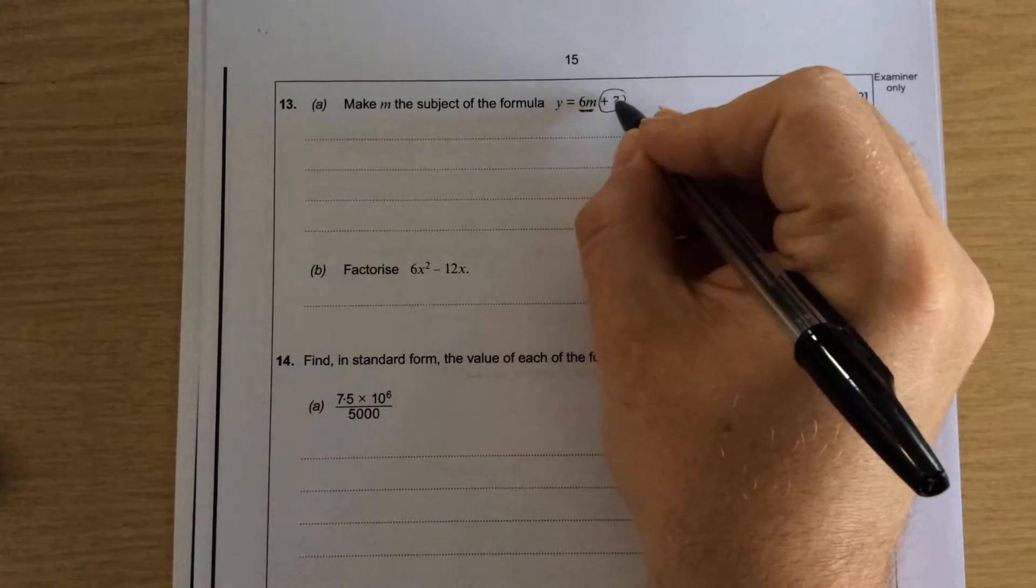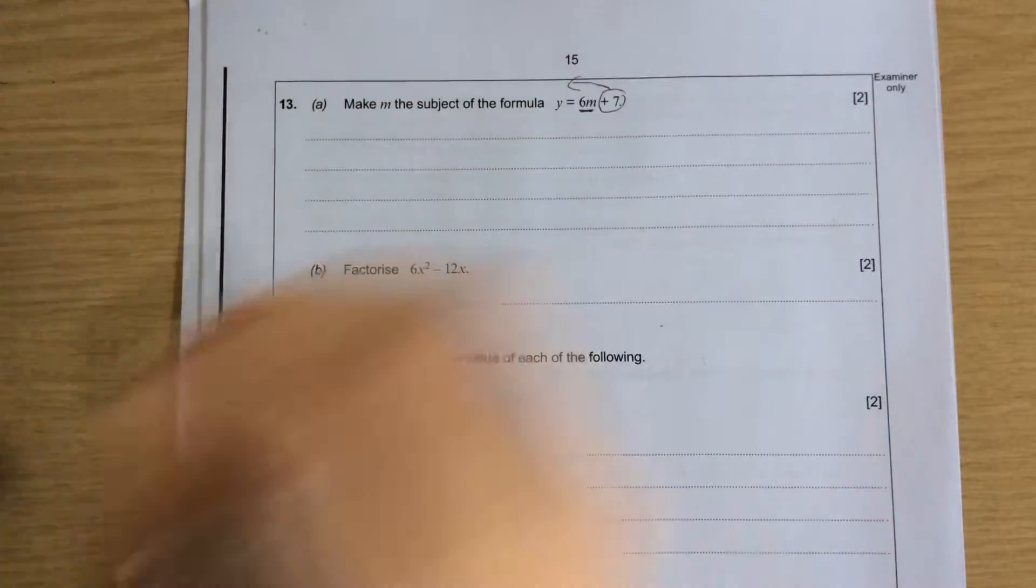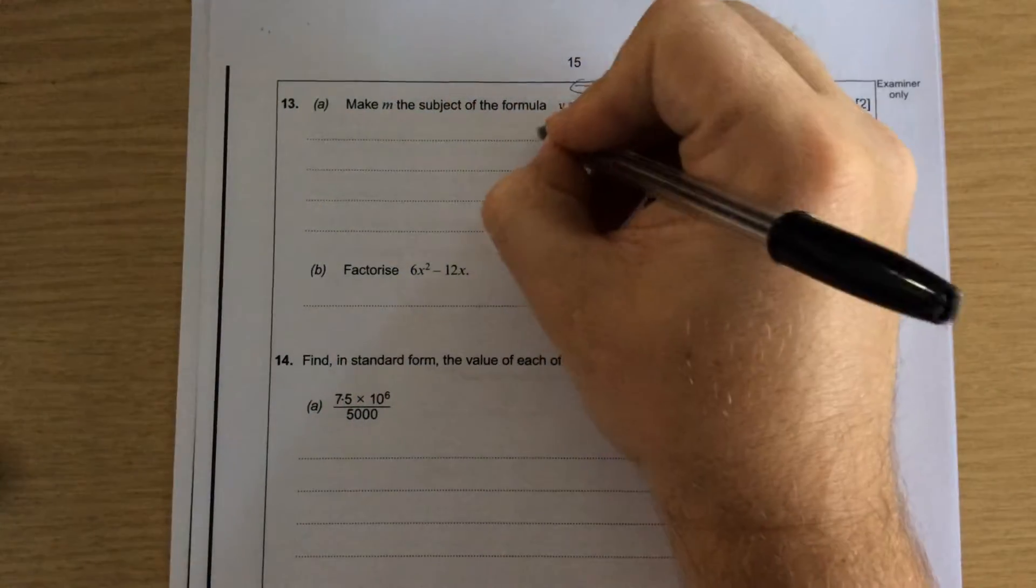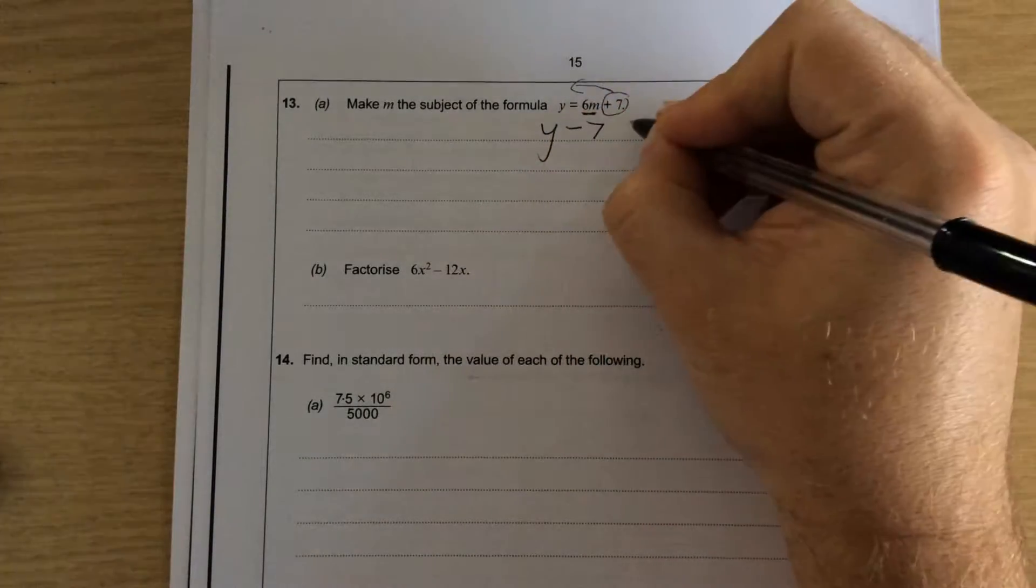So because it means 6 times m plus 7, the first thing I need to do is take the plus 7 over the other side. The opposite of plus 7 is take away 7.